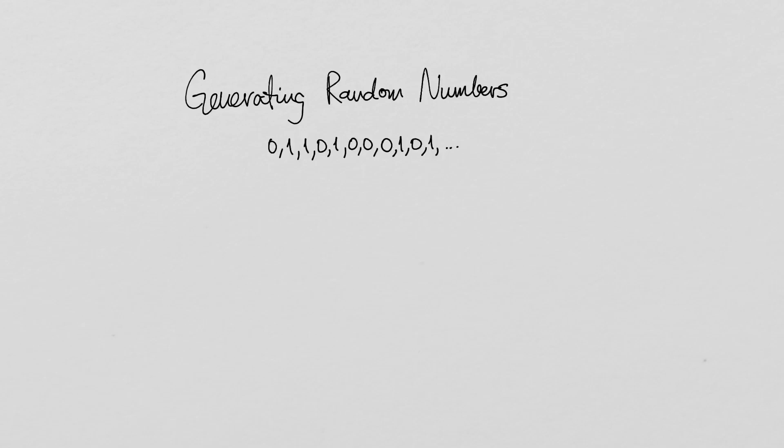There are several properties we might want from a random number generator. First, unpredictability. Random numbers are unpredictable, so we want our generating process to at least avoid producing any obvious patterns.